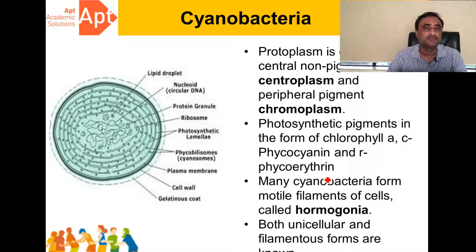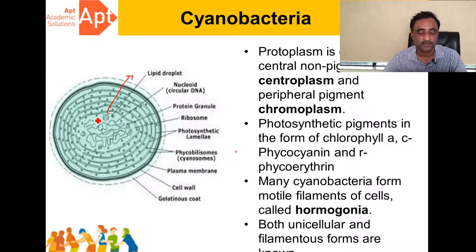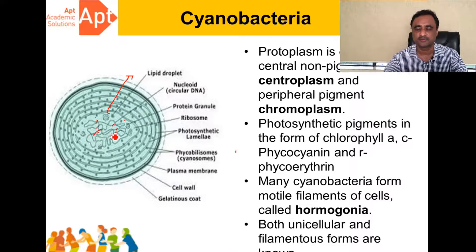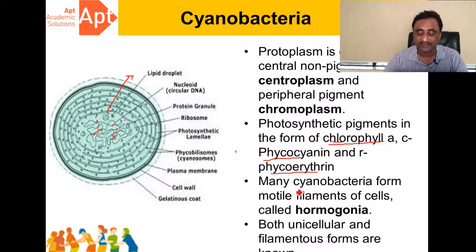Now let's look at the general structure in this diagram. The structure can be divided into two parts. The outer region contains thylakoid-like structures and is called the chromoplasm, or outer pigmented region. The central region is called the centroplasm, which does not contain pigments. As far as photosynthetic pigments are concerned, they have chlorophyll A and phycobilins — C-phycocyanin and R-phycoerythrin. They do not have chlorophyll B.